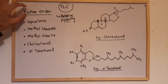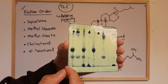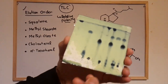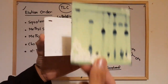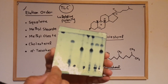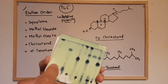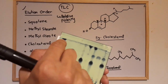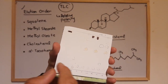"Elute first" means the component in the mixture that moves upward along with the solvent and travels the greatest distance. If a component has low affinity for the stationary phase, it moves along with the solvent upward and is not retained by the stationary phase — that is what we call eluting first.